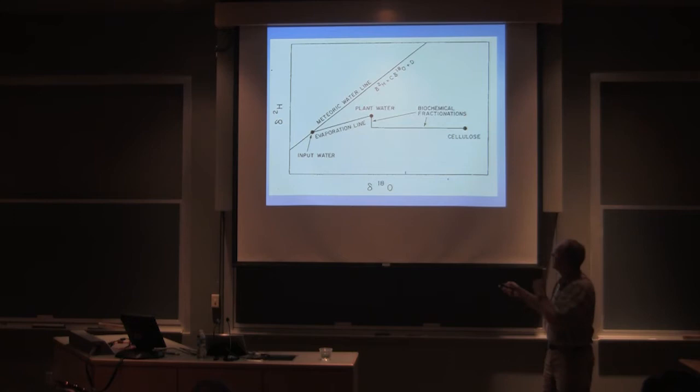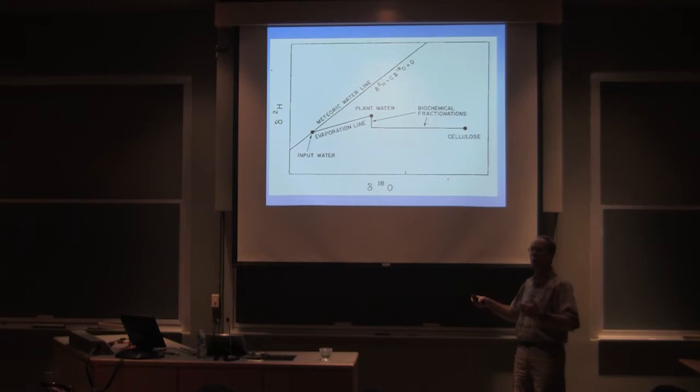This can be visualized to some extent here. This is the meteoric water line, right? And this is the input water the tree is getting, whatever it is. And so what happens when there's transpiration, you've all done this in class, there'll be transpirational evaporative enrichment in your